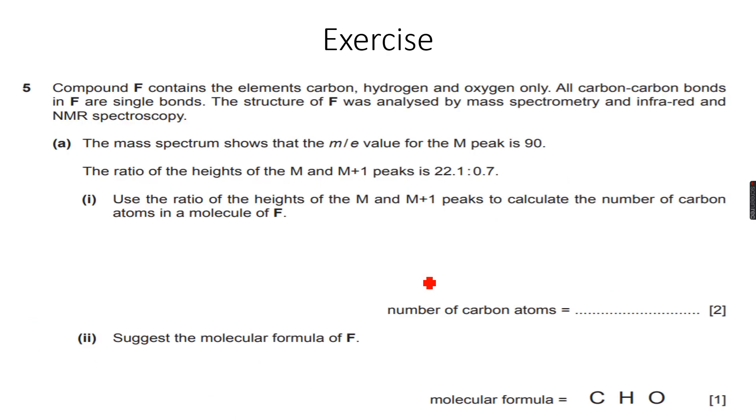Okay, so we have done whatever we had to do for mass spectrometry. Now let's do some questions. So this says that compound F contains the elements carbon, hydrogen and oxygen. Very important to note while you're solving questions - carbon, hydrogen and oxygen only. All carbon-carbon bonds in F are single bonds.